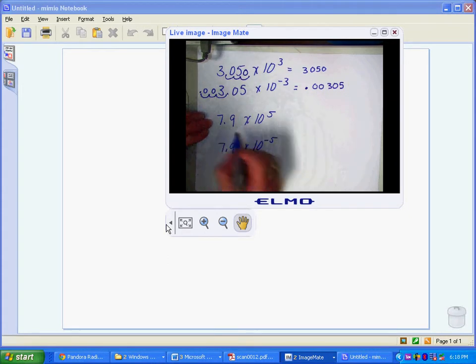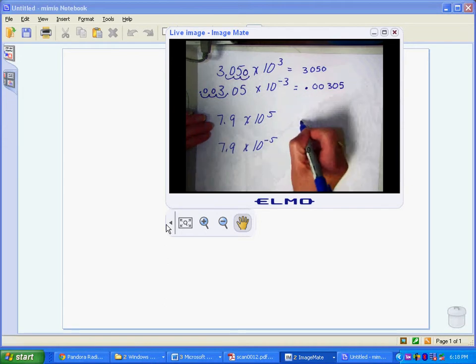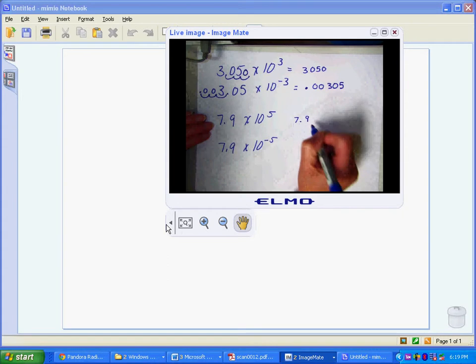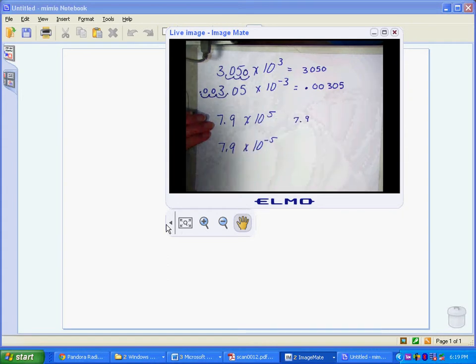Now, let's take a look at this number, 7.9 times 10 to the fifth. I'm just going to rewrite it out here so I can have room. Again, I have a positive exponent. So I know I have to move my decimal five places, but the question is, do I move it five places this way or five places this way?